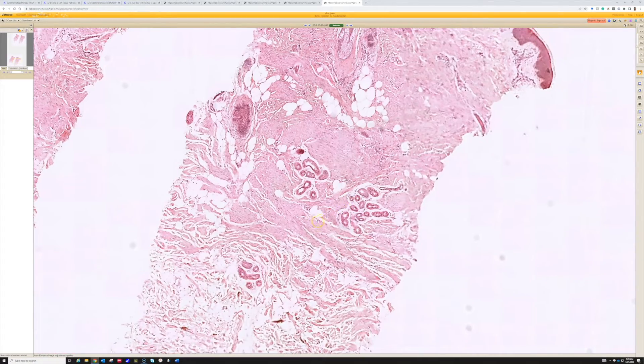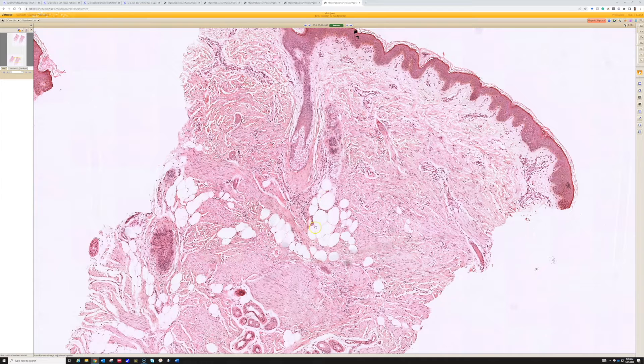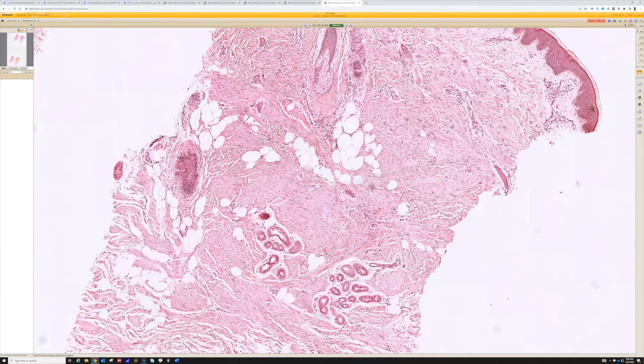So dermatomyofibroma is benign. And the one other entity that could come up here, especially when you see fat entrapped in the middle of it, there's another entity that looks quite similar, in my opinion, and it's called CD34 positive fibroblastic connective tissue nevus. And even though the word says nevus, it's nevus in the sense of like birthmark, the old Latin meaning of nevus, not melanocytic nevus.